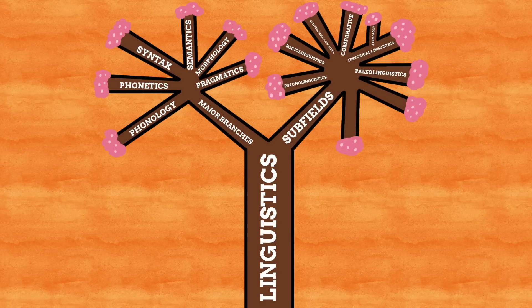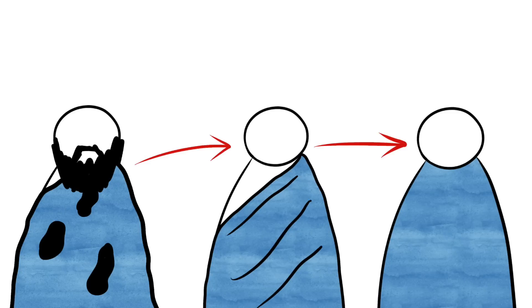Some linguists go a step further back in time with the study of paleolinguistics — the study of language from the far past of human civilization. Of course, by going back this far it can be hard to make any actual conclusive studies on the language, as at this point in human history it was barely recorded. But the idea of paleolinguistics is that if we could go back far enough, we could figure out more about how languages evolved into what they are today.